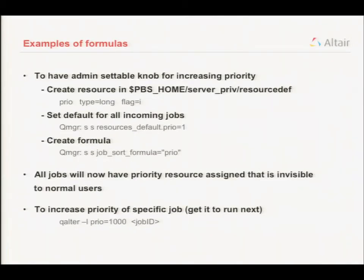Here are some examples of actually using the formula. I created an invisible resource called 'prio', set it as a server default to 1, and basically set that to be the formula. So if an admin decides he wants to bump up the priority of a job, he can just change the value of that resource on the job with qalter, and that job will instantly get bumped up in priority the next scheduling cycle.